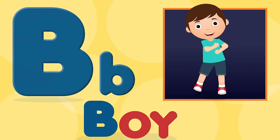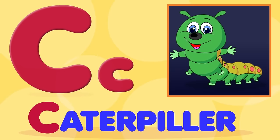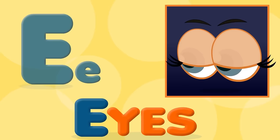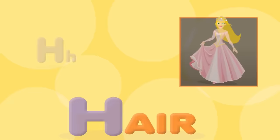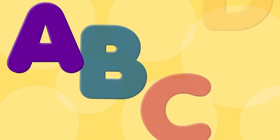A for alligator, a-a-alligator. B for boy, b-b-boy. C for caterpillar, c-c-caterpillar. D for den, d-d-den. E for eye, a-a-eye. F for fruit, f-f-f-fruit. G for giraffe, ch-ch-giraffe. H for hair, h-h-hair.